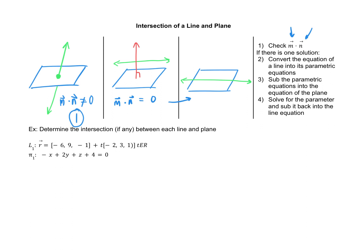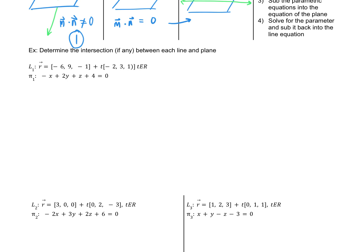Let's try our first example. Determine the intersection, if any, between each line and plane. Starting with the dot product of the direction vector (-2, 3, 1) and the normal (-1, 2, 1), we get 2 + 6 + 1 = 9. The normal and the direction vector are not perpendicular, which means the line and the plane are not parallel. So there is going to be a point of intersection.